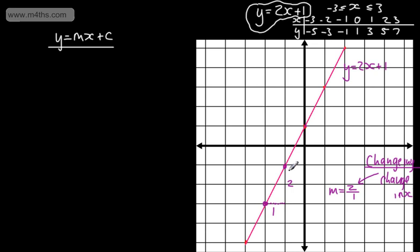For example, if I draw another line that goes up 3 for every 1 it goes across, we'd say the gradient m = 3. There's also this interesting point at (0, 1). This value of 1 gives us the y-intercept.